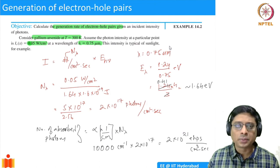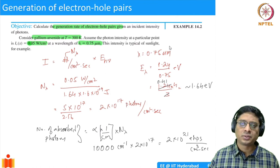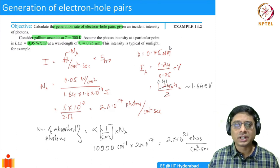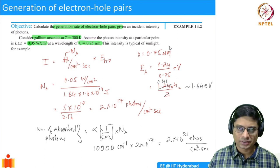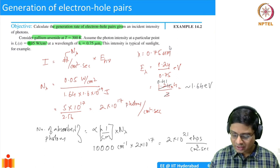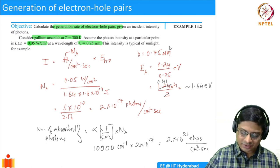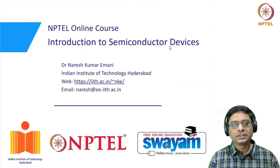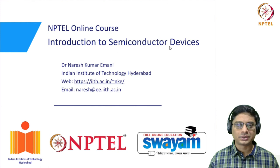Given an absorption coefficient for a material at a particular wavelength, you can estimate how many photons are absorbed and how many electron-hole pairs are generated. Note that not all photons convert to electron-hole pairs — there is a certain efficiency, and you scale by that if given. This concludes our discussion of optical absorption. In the next video I'll talk about solar cells, which is a very important semiconductor device today.